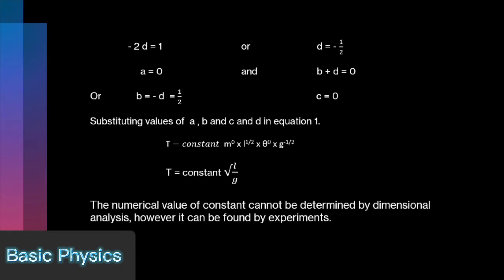Substituting values of a, b, c and d in equation 1: Time period T is equal to constant into under root l by g. The numerical value of constant cannot be determined by dimensional analysis, however it can be found by experiments.